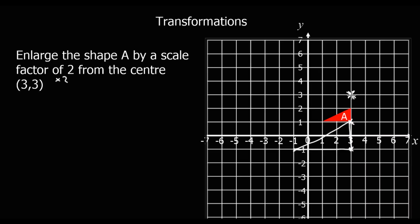Again, if I draw lines from the centre of enlargement through both shapes, I can see that the point on the original shape lines up with its corresponding point on the enlargement.